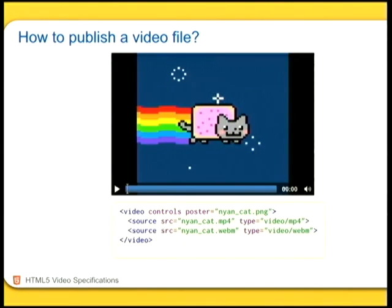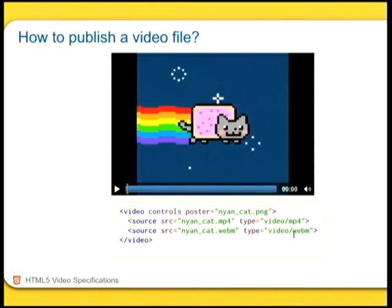Now, video. We've already almost learned it all — it's very similar. It's a video element, it's got controls, it's got source elements, and you provide the link to the files. The type attribute is very useful because it helps the browser decide whether it can play back that video or audio file. Here we've got an MP4 file with type video/mp4, and a WebM file with type video/webm. In Chrome it'll play back the WebM. It'll do the same in Firefox and Opera. WebKit and IE will use the MP4 version.